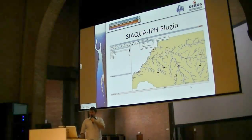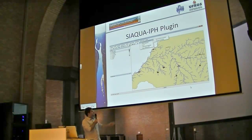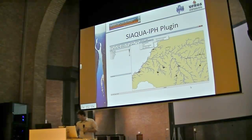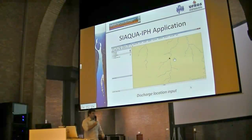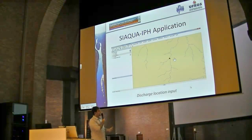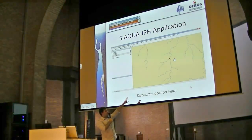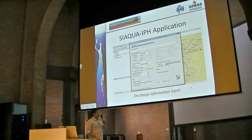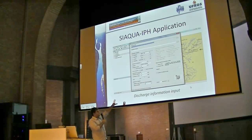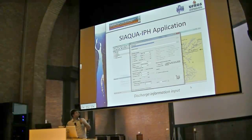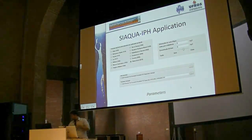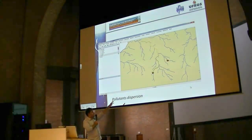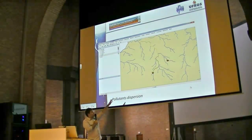This is the water quality modeling tool that I am developing and presenting today. It's a plugin working on MapWindow 4. There's the plugin — the main menu. For the discharge input, it's very simple: you just need to locate the place and click on the map with the mouse. Then a window will appear and you just have to enter some information about the pollutant discharge, like the kind of discharge, the concentration, and some parameters about the river.